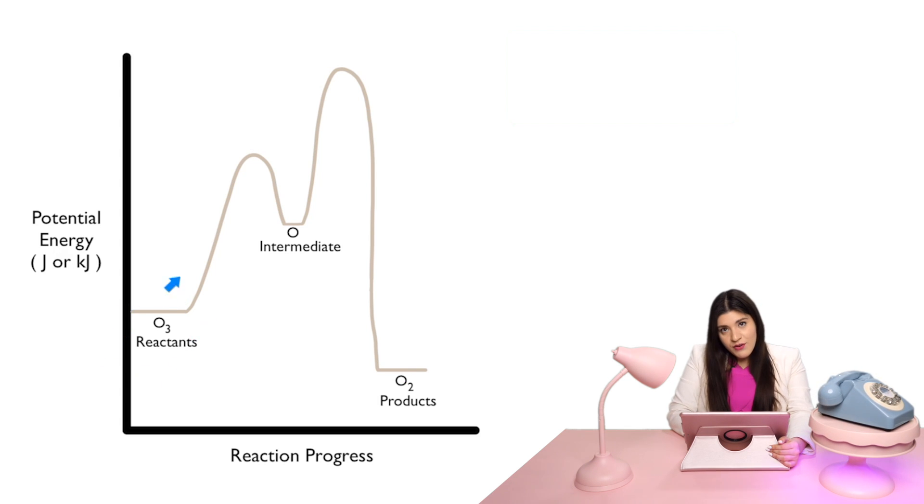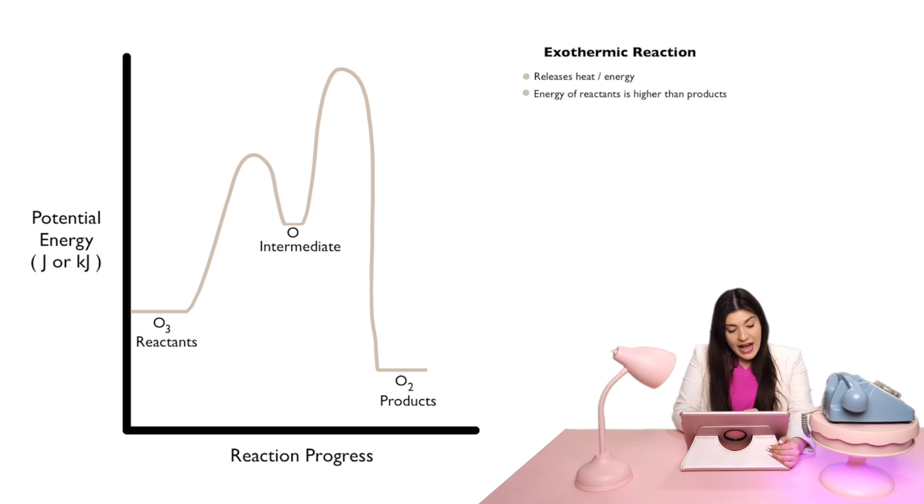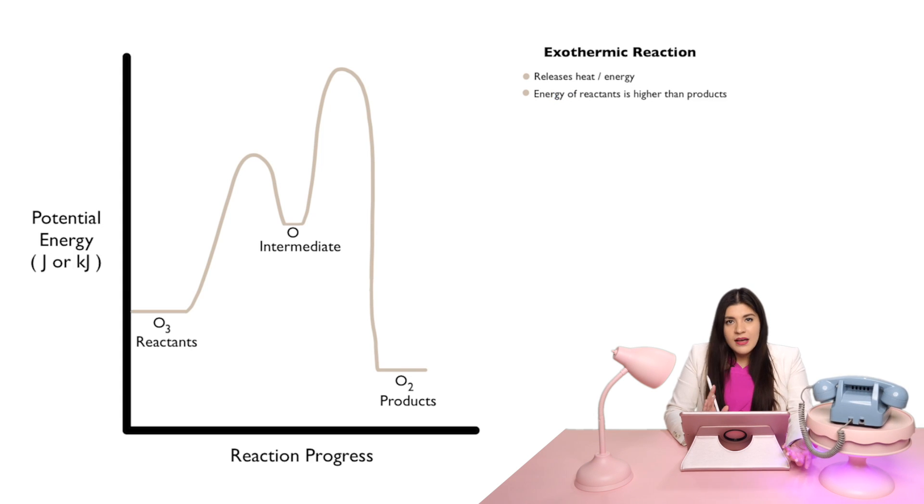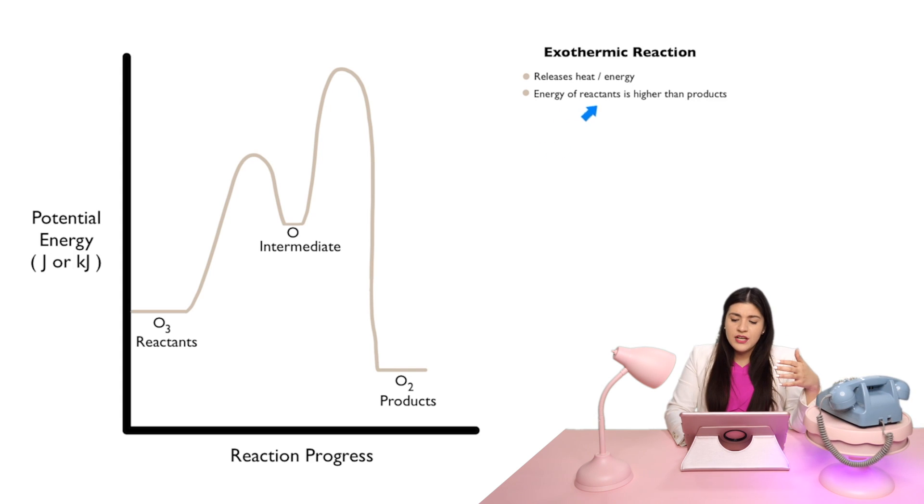Whenever the energy of our reactants is higher than our products, then that tells us it's going to be an exothermic reaction. What an exothermic reaction is, this is essentially telling us that heat is being released or energy is being released since energy or heat is a form of energy.